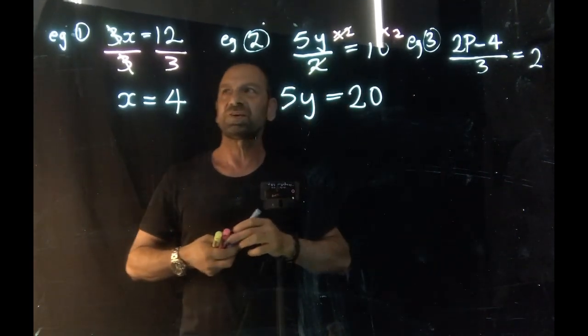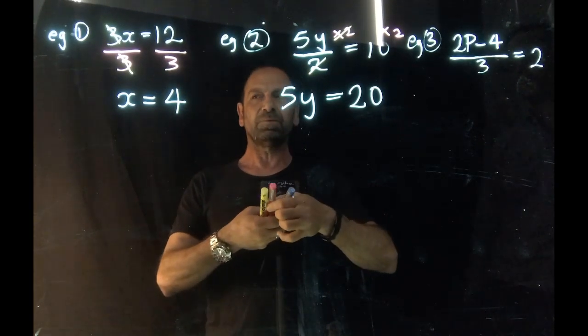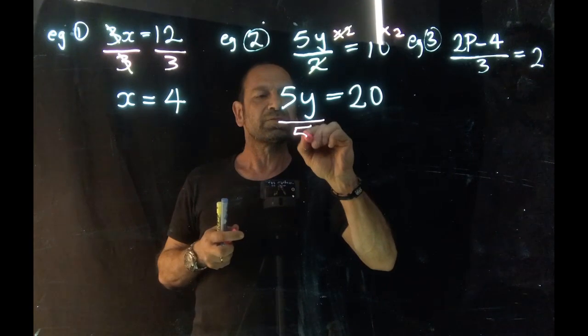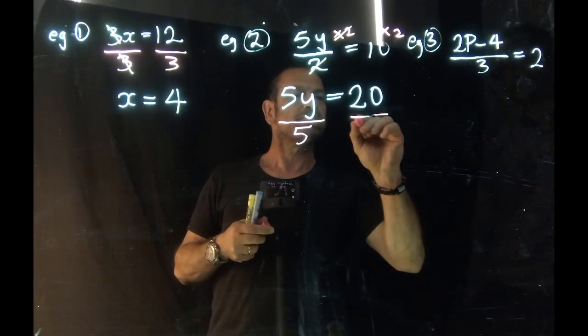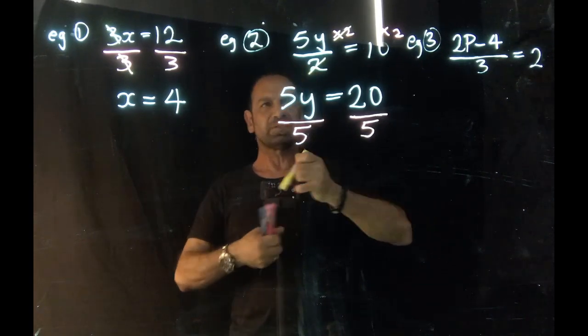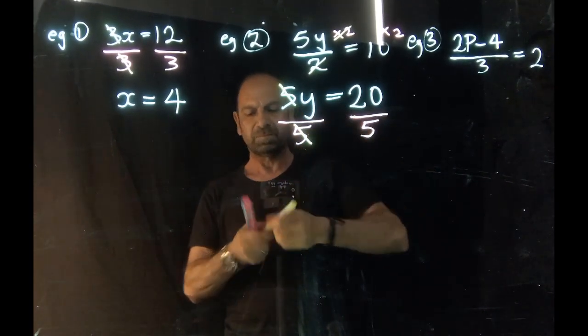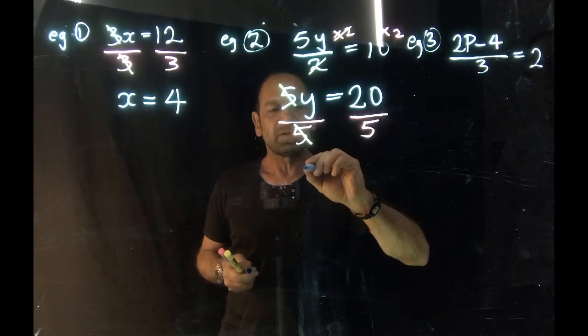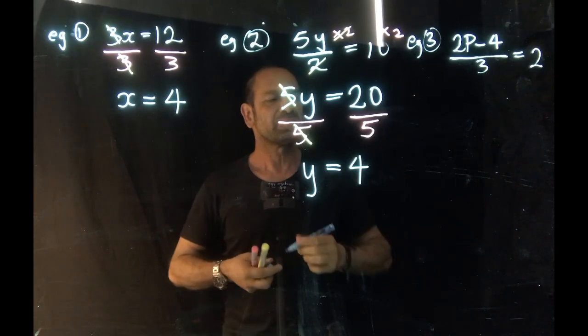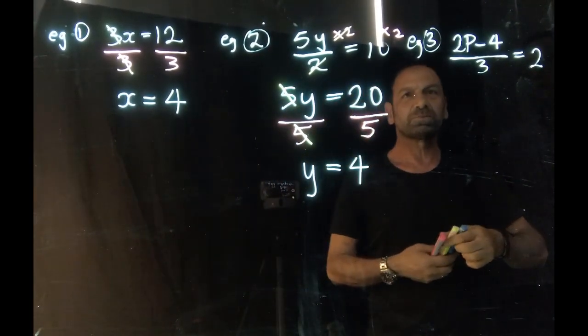Now we've got something that looks a fair bit like the first example. So the next step here, we need to divide by 5 both sides. That allows us to cancel the 5s, finally leaving us with y equals to 4. You've noticed this has two steps that we needed to perform.